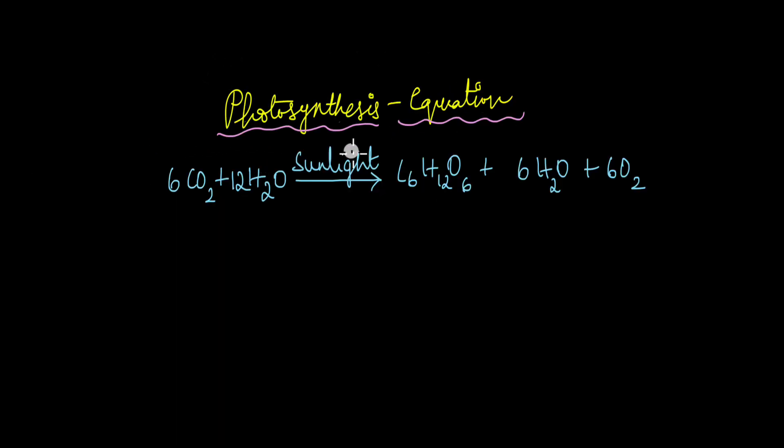This is the equation of photosynthesis where you have six carbon dioxide and 12 water molecules reacting in the presence of sunlight to give one molecule of glucose, which is C6H12O6, six molecules of water, and six molecules of oxygen as the byproducts.